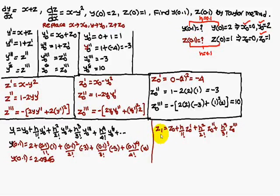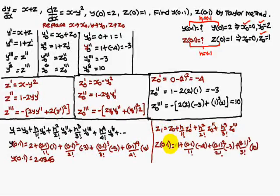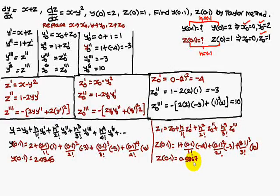Similarly, z₁ equals z naught plus h/1! into z naught dash, and so on. Substituting all values, we get z(0.1) equal to 0.5867.